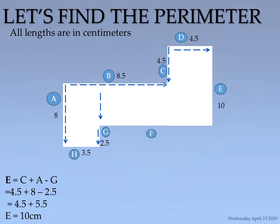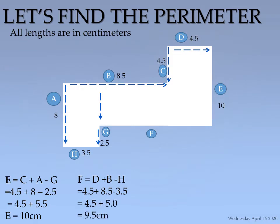Line F actually stops before the end of line B, so we take the excess away. The excess length is on H, which is 3.5. So line F = line D + line B − line H, which is 4.5 + 8.5 − 3.5. Doing the arithmetic, the answer is 9.5 centimeters.